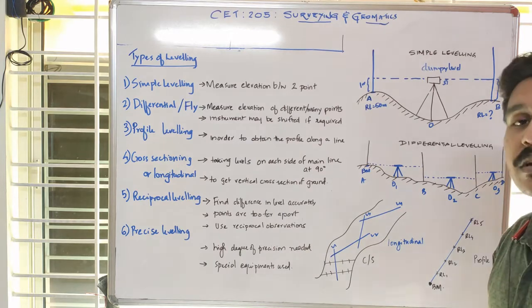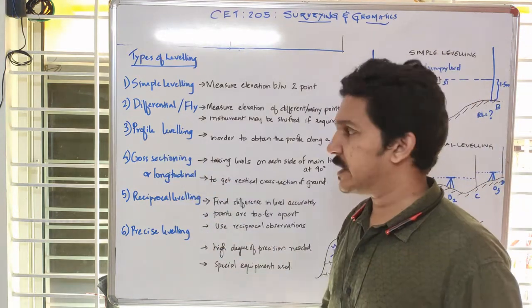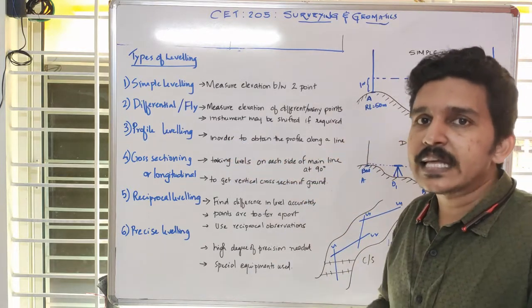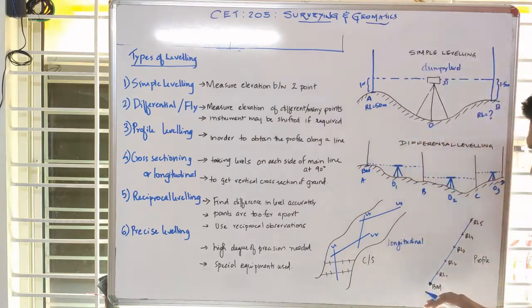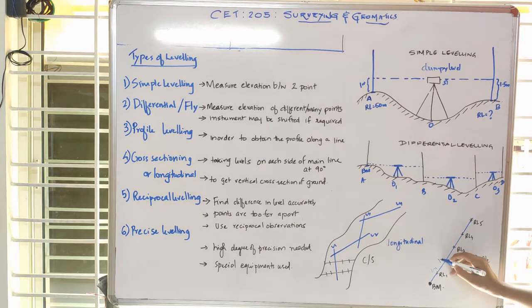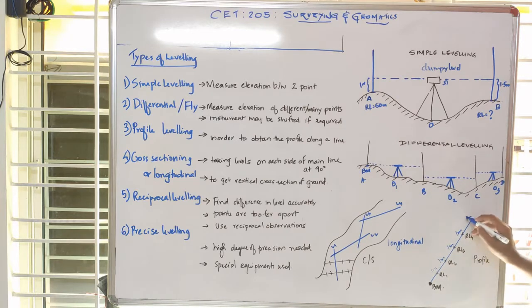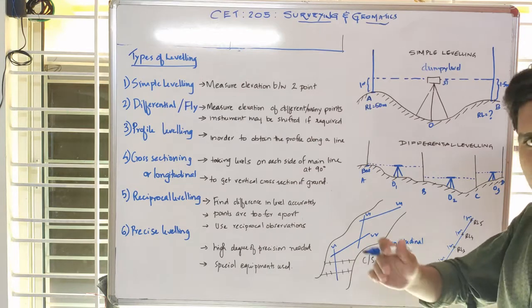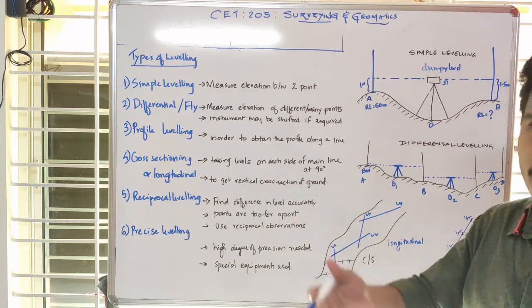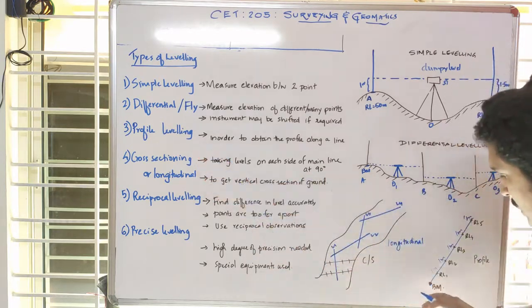Differential leveling is also known as fly leveling or check leveling. The next type is profile leveling, which is used to obtain the profile along a line — meaning the unevenness of the ground. If we select a center line of a road, we measure various points at fixed intervals, maybe every one meter, to find the height of the ground. If the height is increasing there is an upward slope; if decreasing, a downward slope.